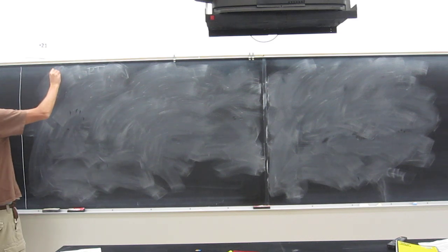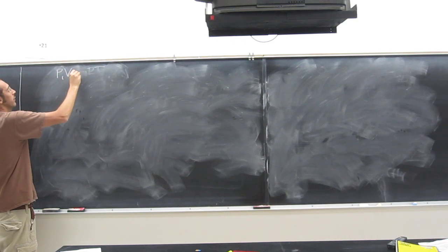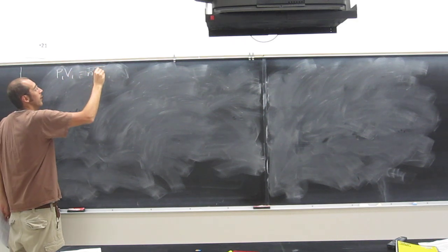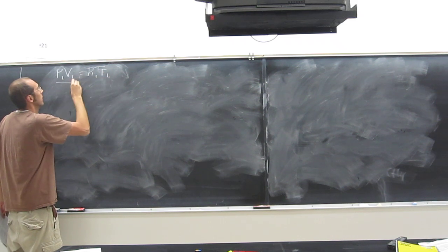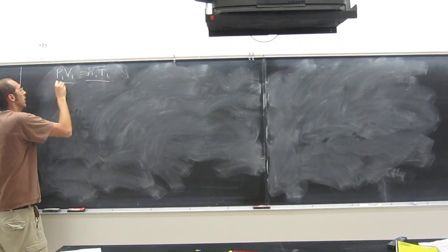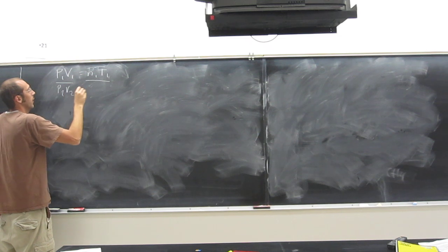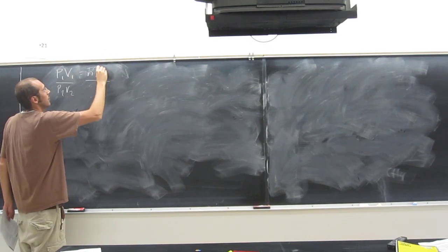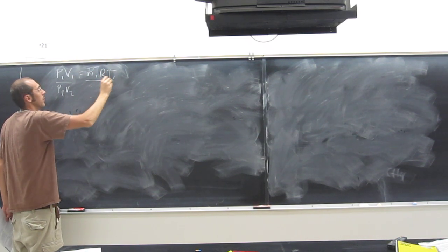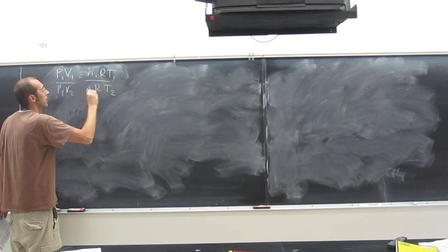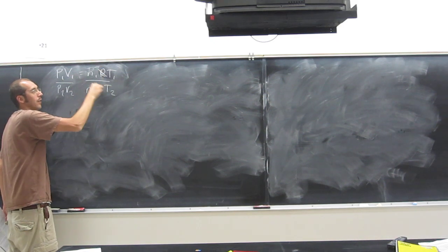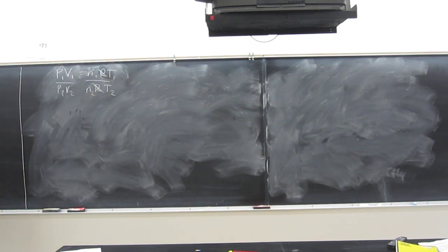Let's write that down. We did P1, V1, N1 and R cancels so we don't even have to put that. P2, V2, N2, R, T2. R is going to cancel already because it's a constant.